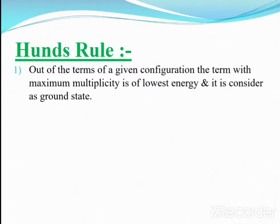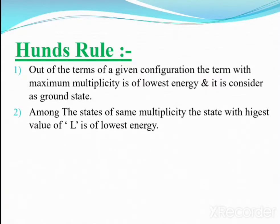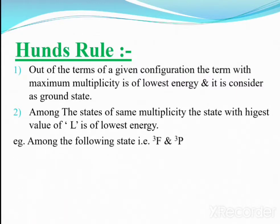Rule number two: among the states of the same multiplicity, the state with the highest value of L is of lowest energy. That means if the RS terms have the same spin multiplicity, we use rule number two — the highest value of L is the lowest energy term.